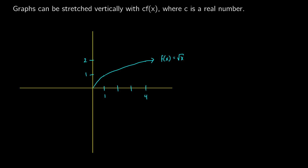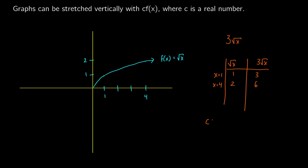Now let's talk about stretching. The first thing we can do is stretch a graph vertically. Imagine f of x equals the square root of x and we want to stretch it vertically. We put a real number in front of it. For the square root of x times 3: if x equals 1 we get the square root of 1 which is 1, but 3 times the square root of 1 is 3. If x equals 4, the square root is 2, but 3 times 2 is 6. So putting in a number greater than 1 makes it bigger in height.